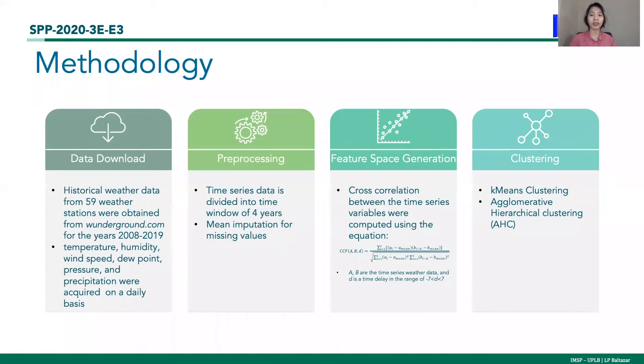To achieve this, we downloaded daily historical weather data from 59 weather stations for the years 2008 to 2019. Mean imputation was used to fill the missing values and the time series data was divided into a time window of four years. Next, cross-correlation between different combination of weather variables were computed per time window. And last, we used k-means and agglomerative hierarchical clustering to obtain clusters from the generated feature space.